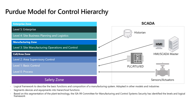Below all levels of the Purdue model is the safety zone, which bleeds through all levels. Level zero is the electrical layer — where electrical motors and actuators live, the physical process itself. Level one is where electrical starts meeting basic controls: is a switch on or off, or switching on and off so fast it creates half-speed motor control — pulse width modulation, or PWM.